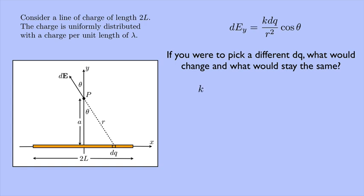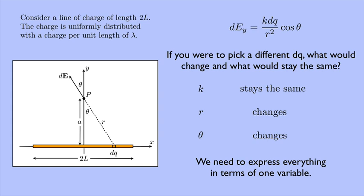Okay, well, k is a constant, so that stays the same. What about r? r is the distance between my little piece of charge and point P. Well, that changes. If I change where dq is, then r changes. What about the angle θ? Well, again, that's going to change. If I pick a different piece of charge, that angle is going to change. So I need to express everything in terms of one variable.